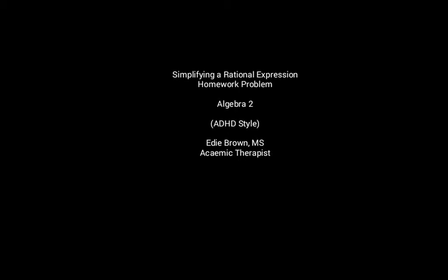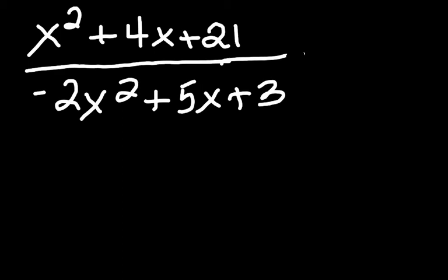This is a homework problem simplifying rational expressions from the Algebra 2 curriculum. So this is the problem, x squared plus 4x plus 21 over negative 2x squared plus 5x plus 3. And the goal is to simplify and then identify if there are any values that cannot be used or excluded from the equation.